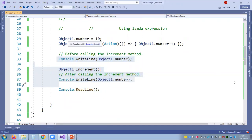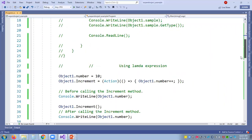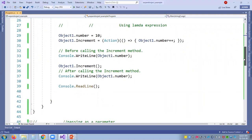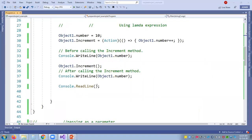You can observe that object1 is the object of ExpandoObject class — as it is dynamic, during runtime it changes behavior, and currently we are using lambda expressions. Now, how to pass as a parameter: you can pass instances of the ExpandoObject class as parameters. Note that these instances are treated as dynamic objects in C# and late-bound objects in Visual Basic. This means you do not get IntelliSense for object members and you do not receive compiler errors when you call non-existent members, because it is a runtime activity. If you call a member that does not exist, an exception occurs.